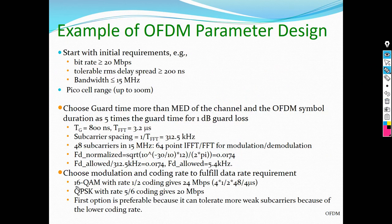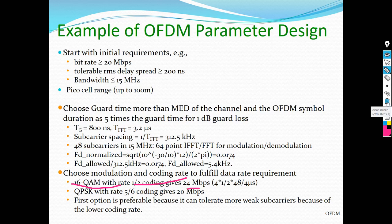The modulation type, coding rate, and data rate all have direct influence on your data rate, bit error rate, and other performance metrics like peak-to-average power ratio and out-of-band emission.